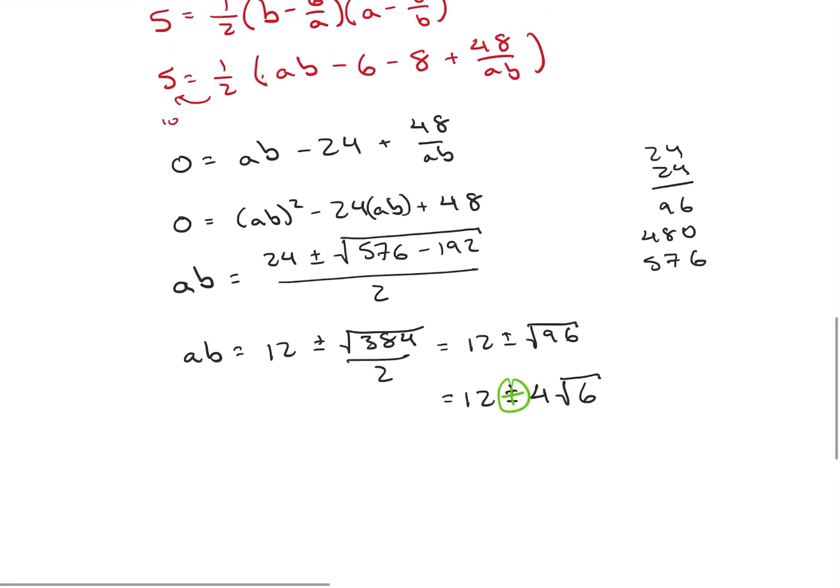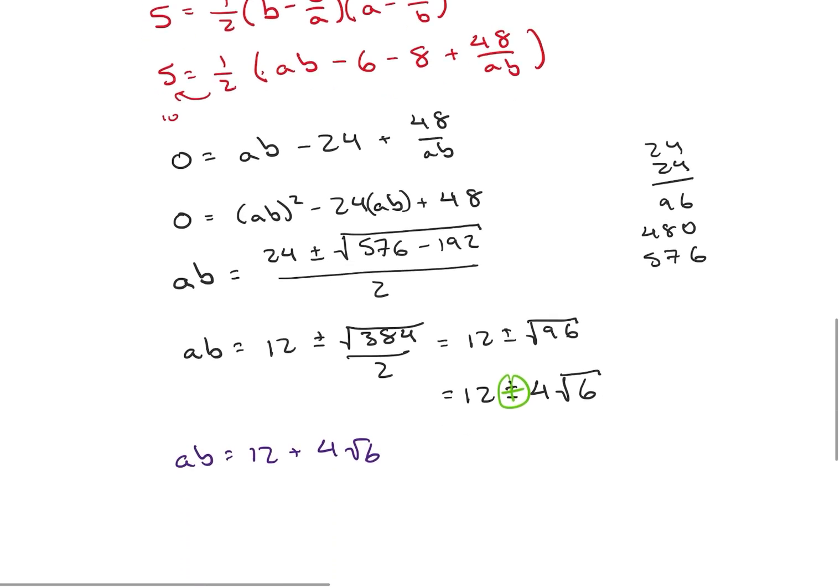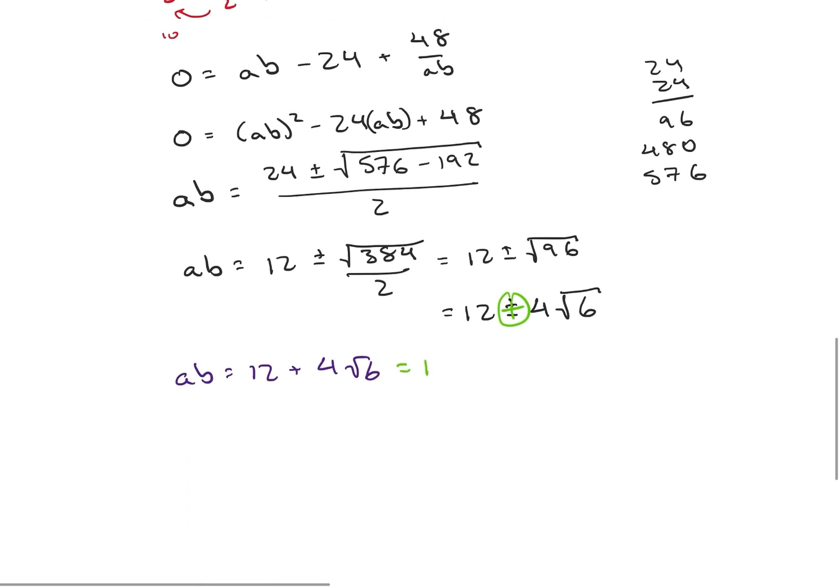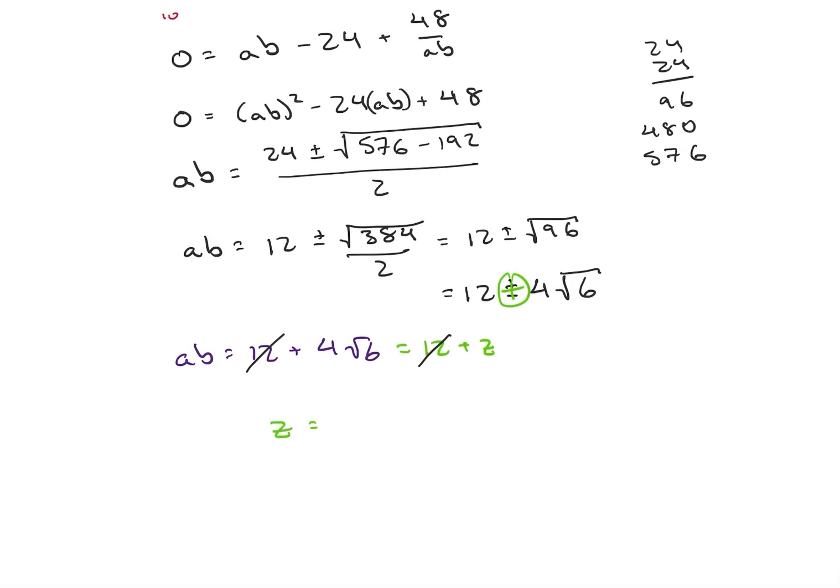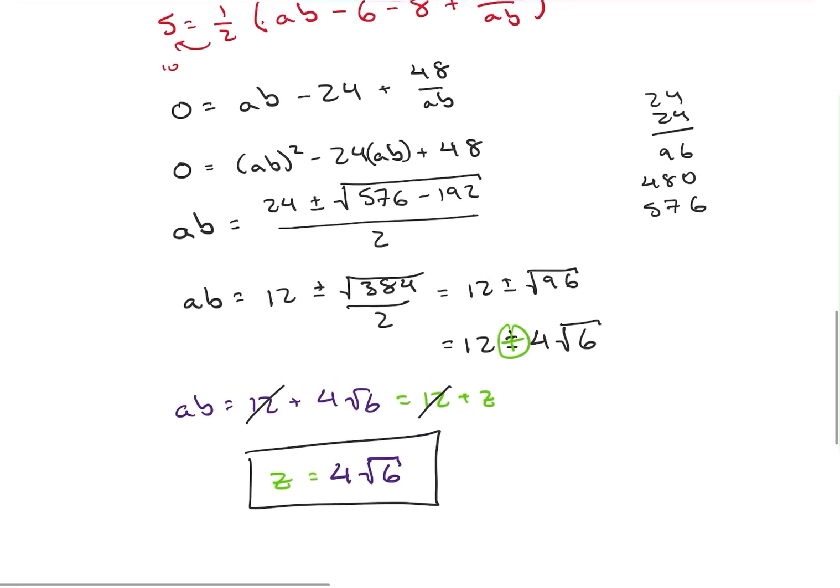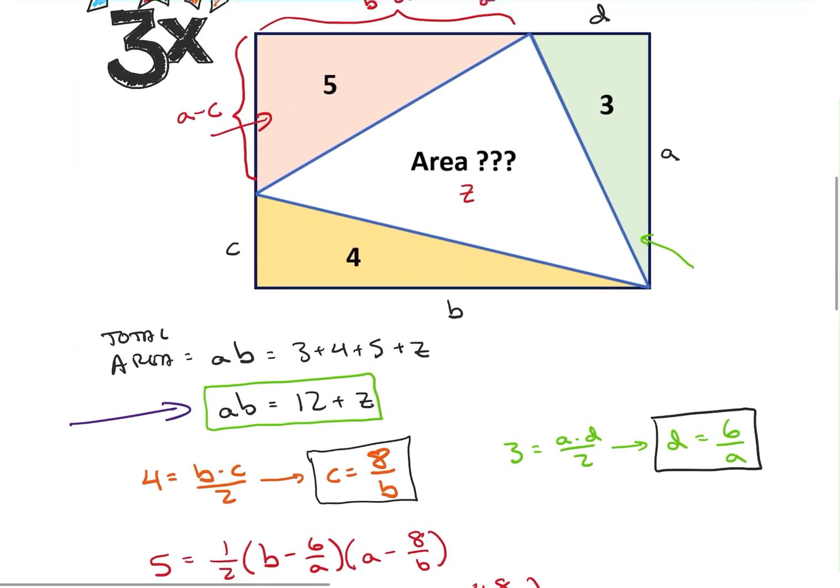So now we're pretty much at our answer. So I have AB is equal to 12 plus 4 square root of 6. But remember from earlier, we said that's equal to 12 plus Z. So what does that tell us? That Z that we calculated earlier must be equal to 4 times the square root of 6. And that is going to be our final answer. So Z, that area above, is going to be exactly 4 square root of 6.